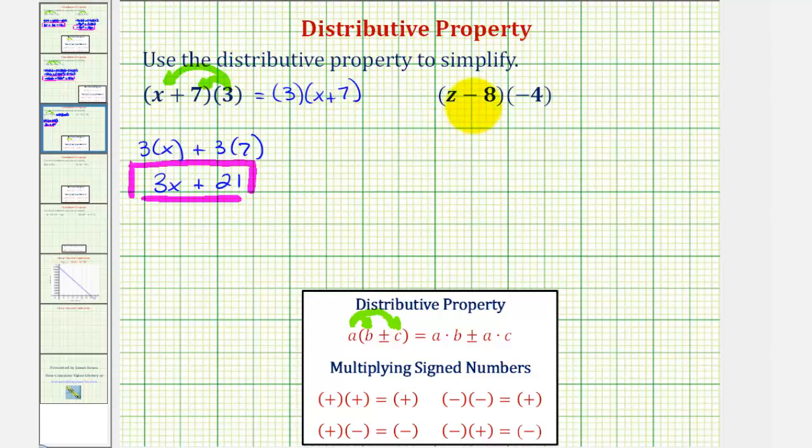So looking at our second example, we multiply both terms inside the parentheses by negative four. So we'll have negative four times z minus negative four times eight.